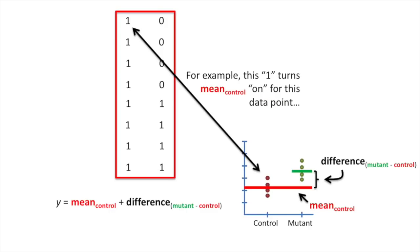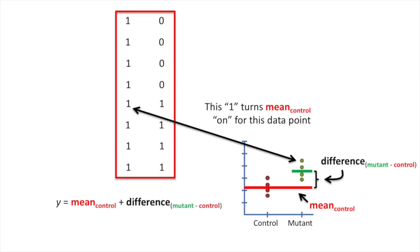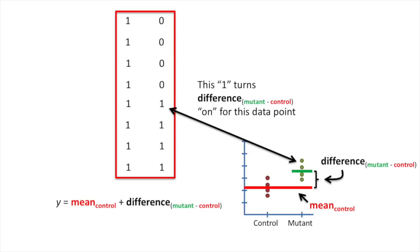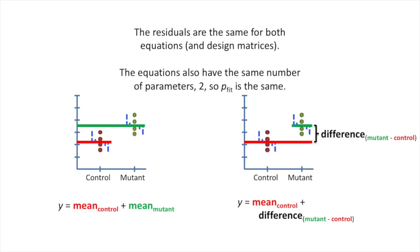For example, a one in the first column turns the term for the mean of the control data on for a given data point, and a zero turns the term for the difference between the mean of the mutant data and the mean of the control data off for that data point. The residuals are the same for both equations and design matrices. The equations also have the same number of parameters, so p-fit is the same.